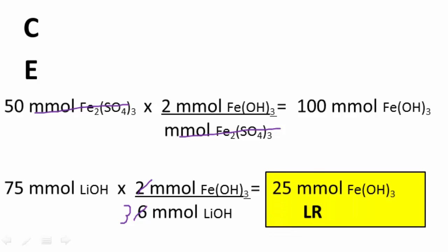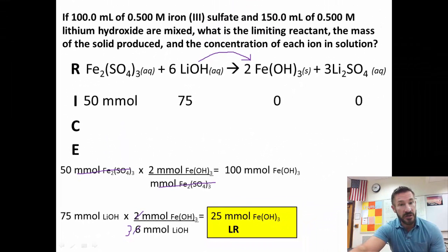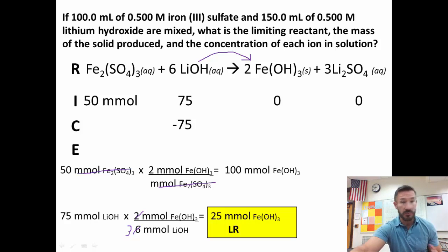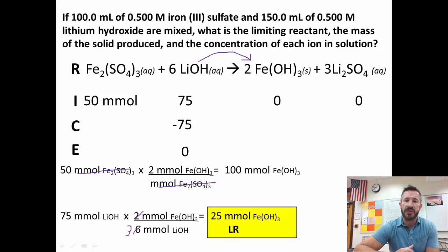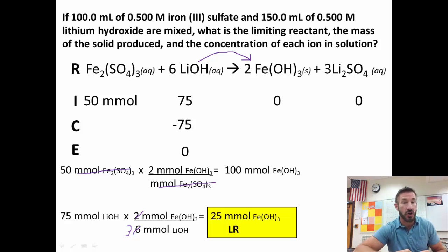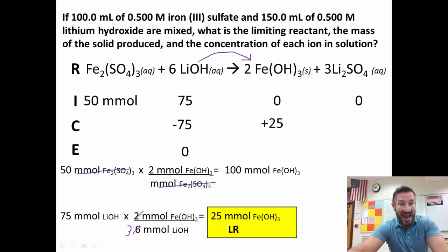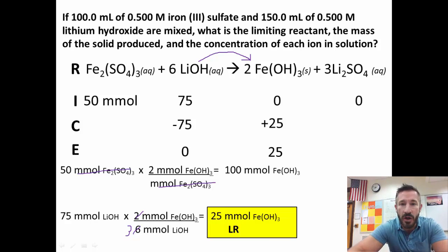Since 25 is smaller than 100, lithium hydroxide is our limiting reactant. This lets us fill out two columns of the RICE table. The limiting reactant is used up completely, so the change for lithium hydroxide is −75 millimoles and the ending amount is zero. The limiting reactant also tells us how much product is produced and how much of the other reactant is used — we get 25 millimoles of iron(III) hydroxide produced.